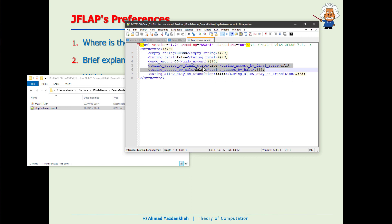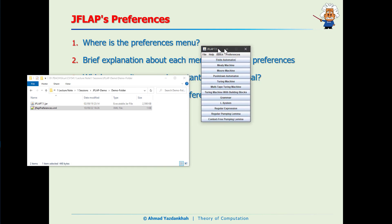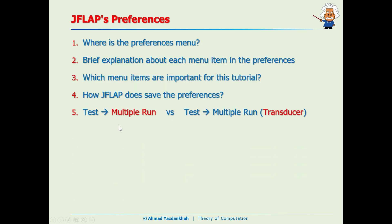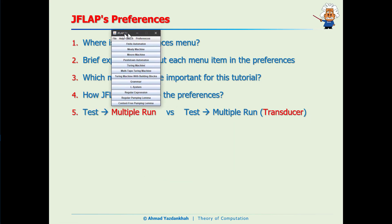The two important settings in this XML file are 'Turing accept by final state' and 'Turing accept by halt.' The rest are not of interest for now. Please note that we should not touch this file directly, because any changes or discrepancies in it may affect the behavior of JFLAB and cause unexpected behavior. We prefer to set everything from within the application.